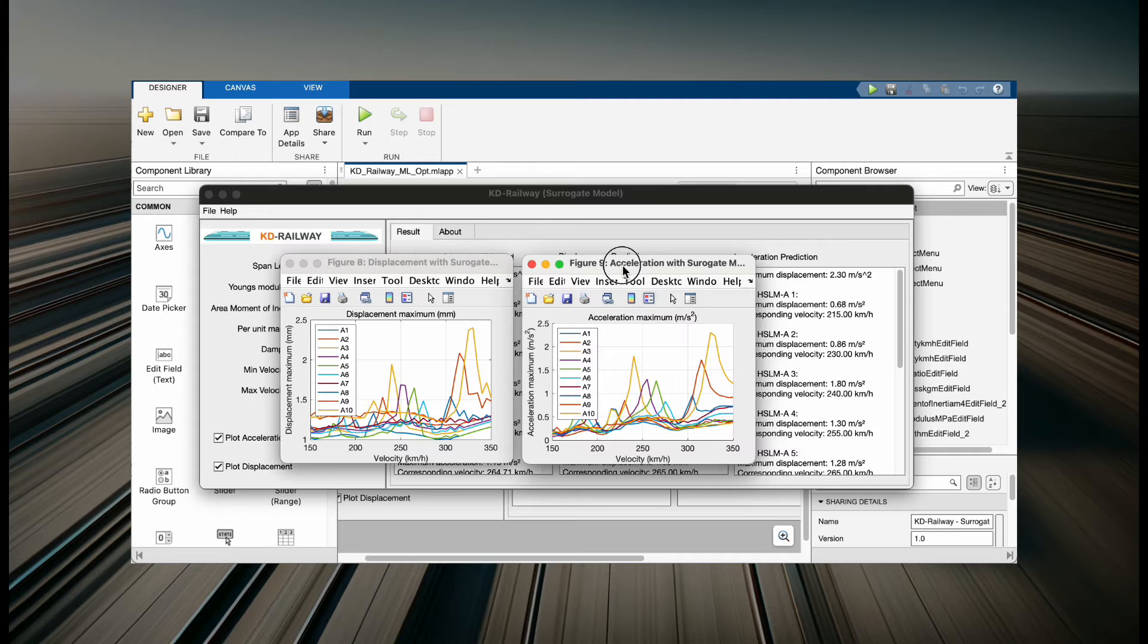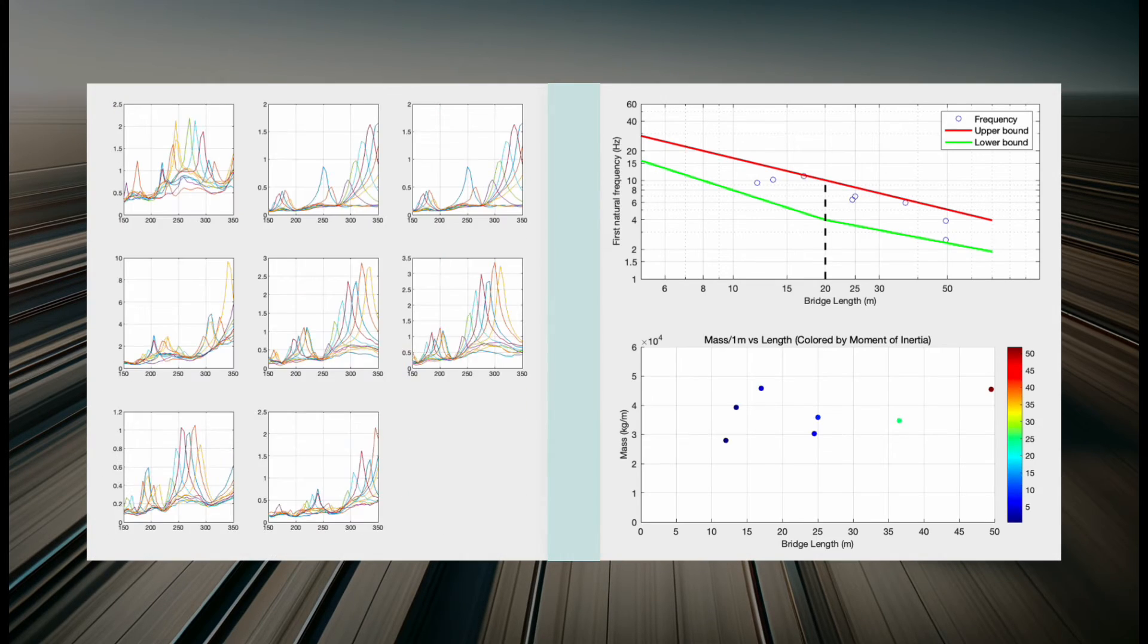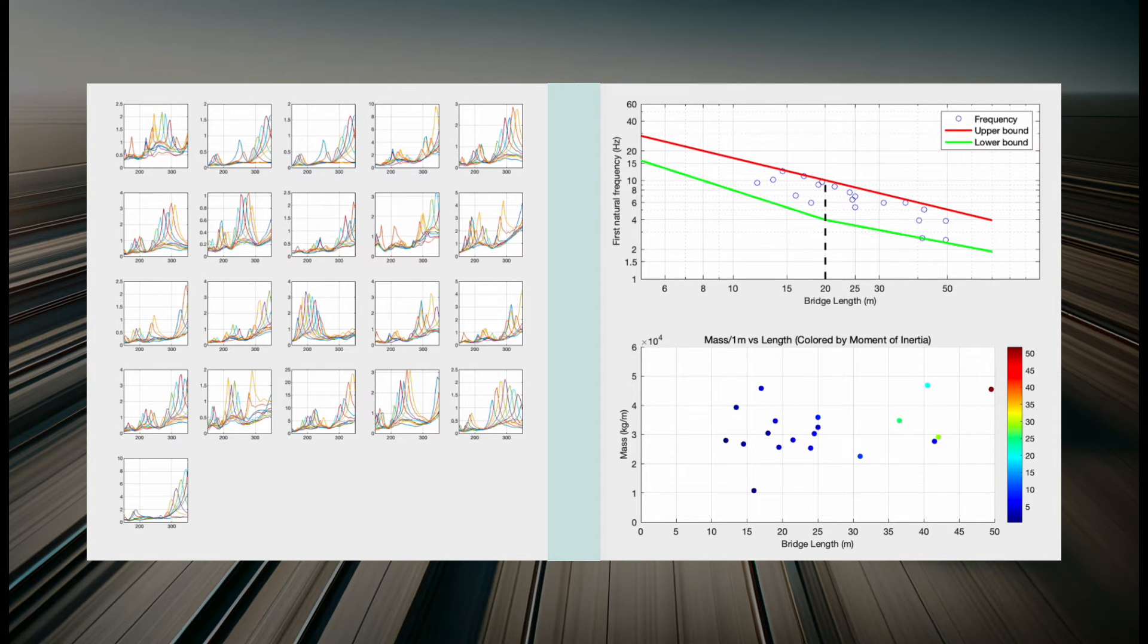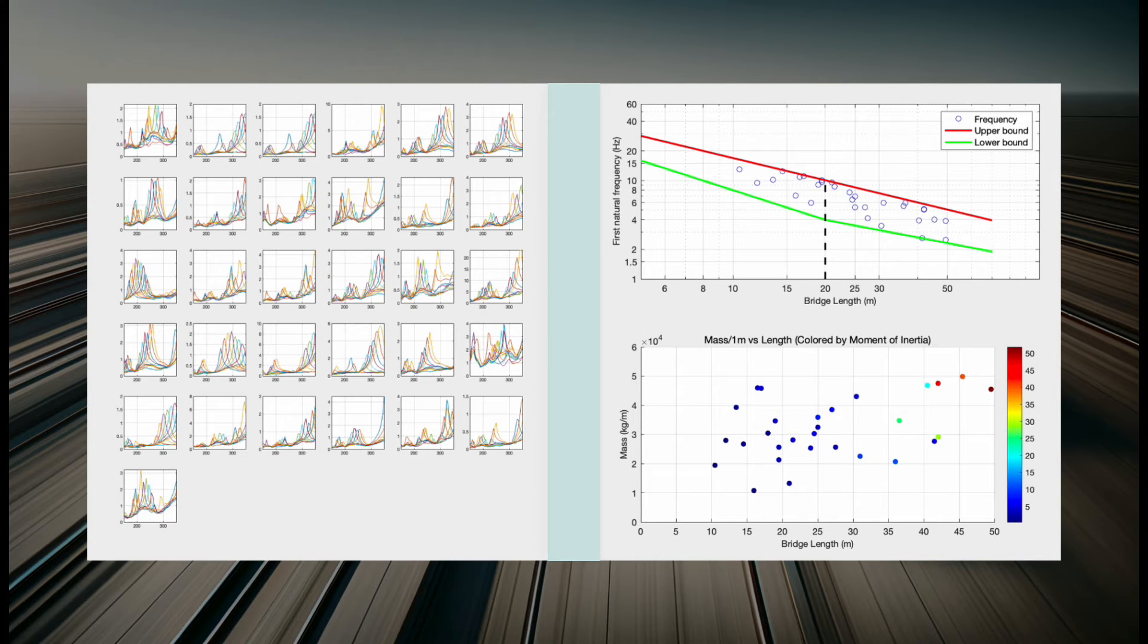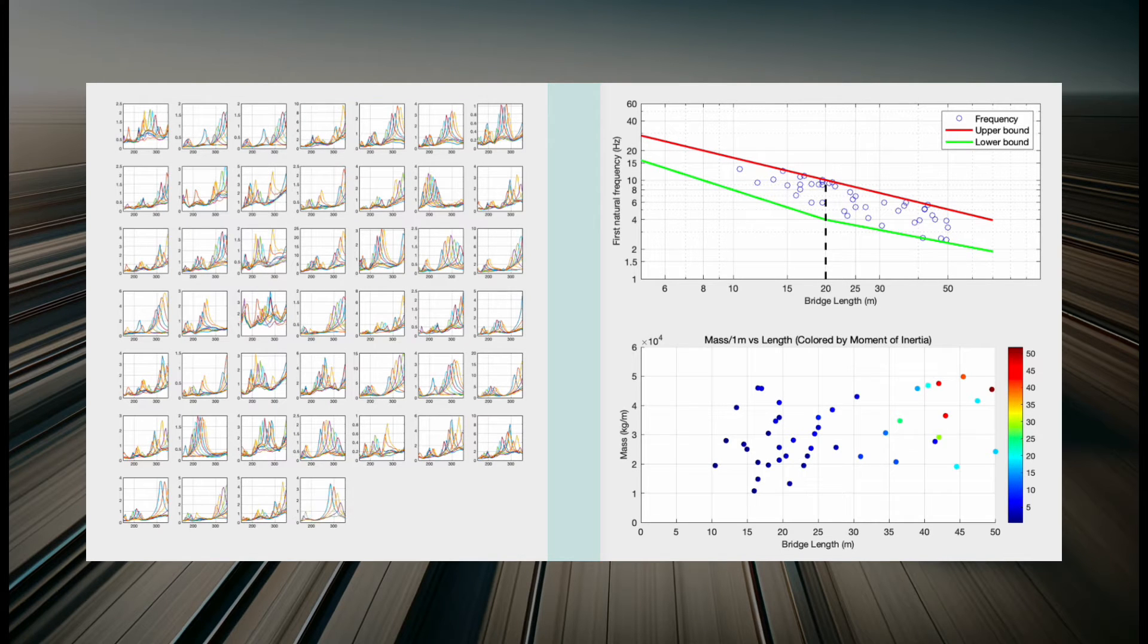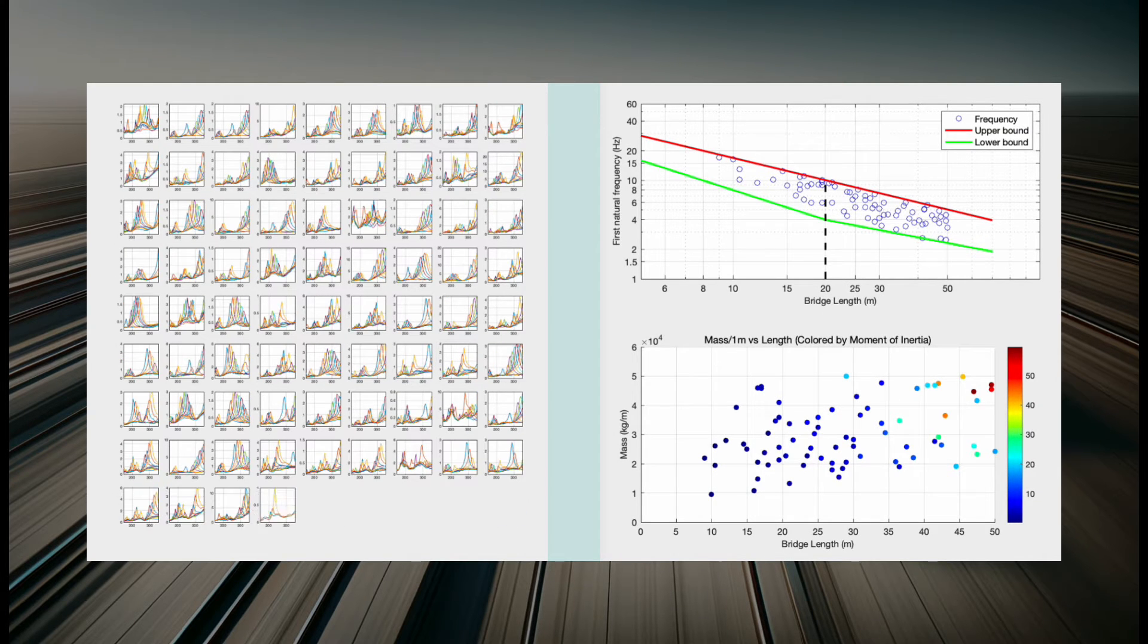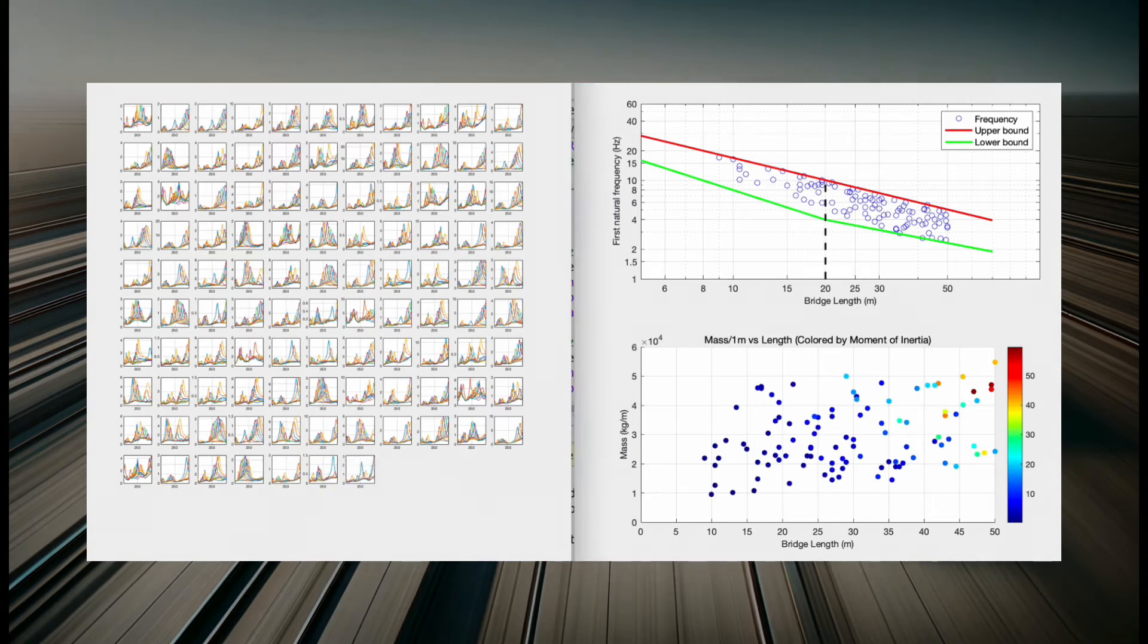How did we achieve this? We started by creating a massive database to understand the dynamic behavior of 1,000 bridges. Yes, this wasn't just a few bridges - we're talking about 10,000 of them. Each bridge was randomly designed following Eurocode standards and then analyzed dynamically. We looked at how they would react to 10 different HSLMA train models, moving at speeds between 100 and 400 kilometers per hour, using our KD Railway software. This whole process took us about 4 days of calculation time.